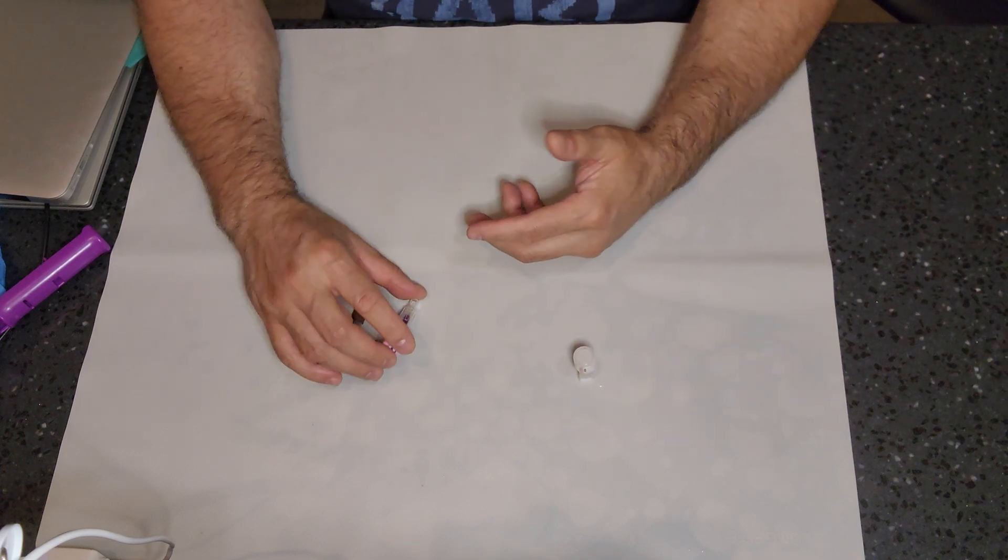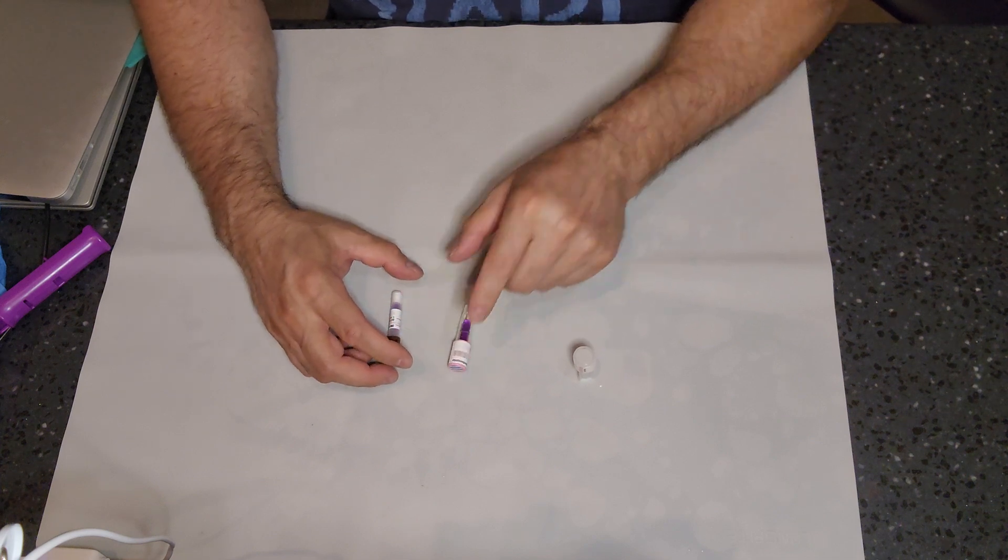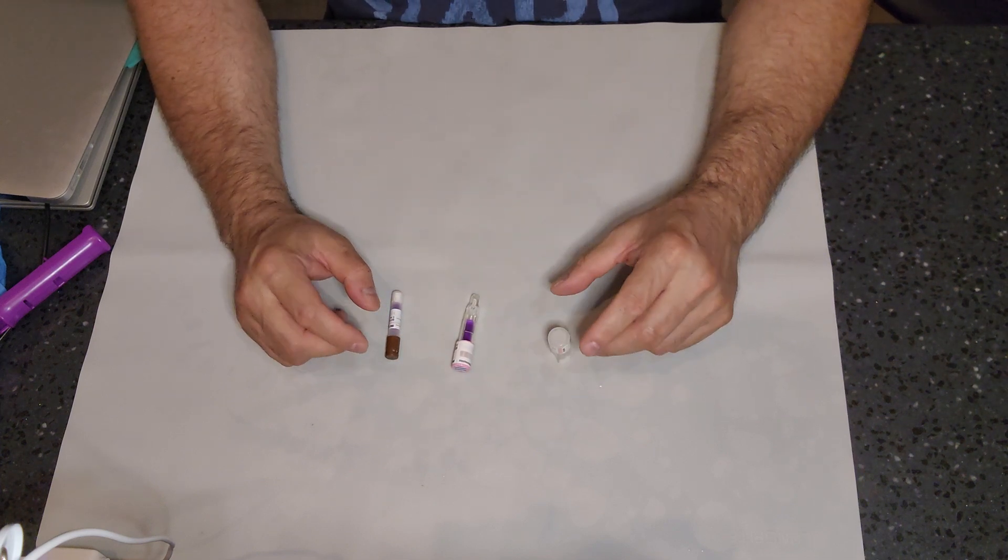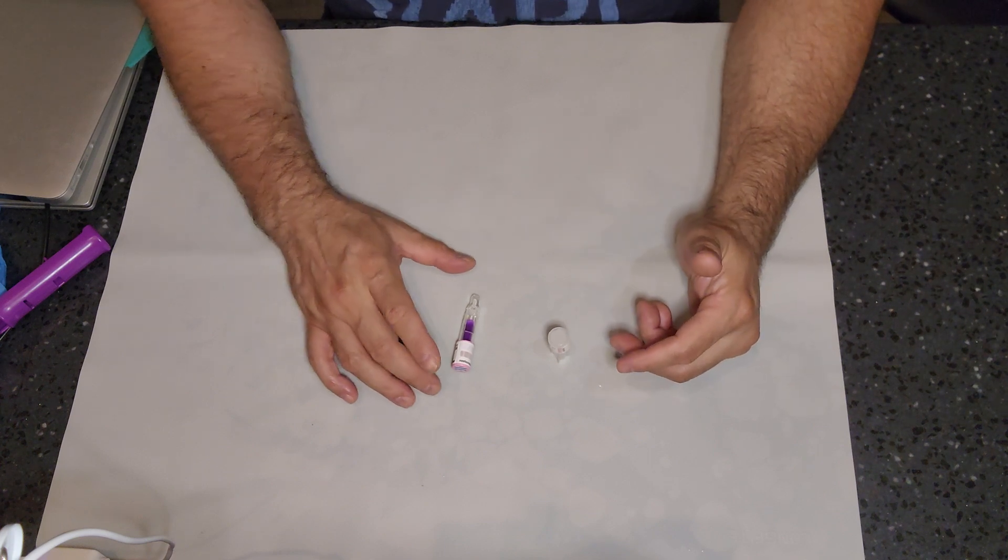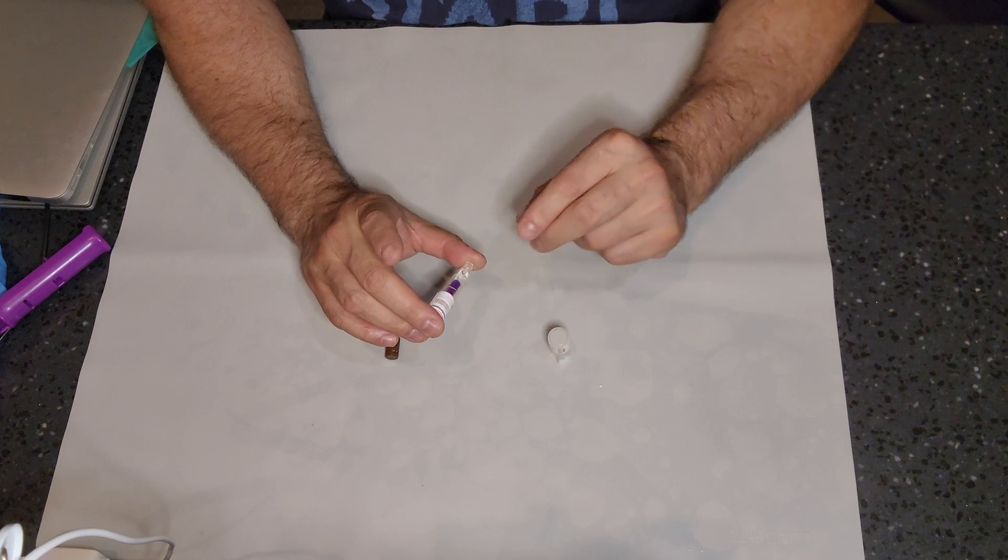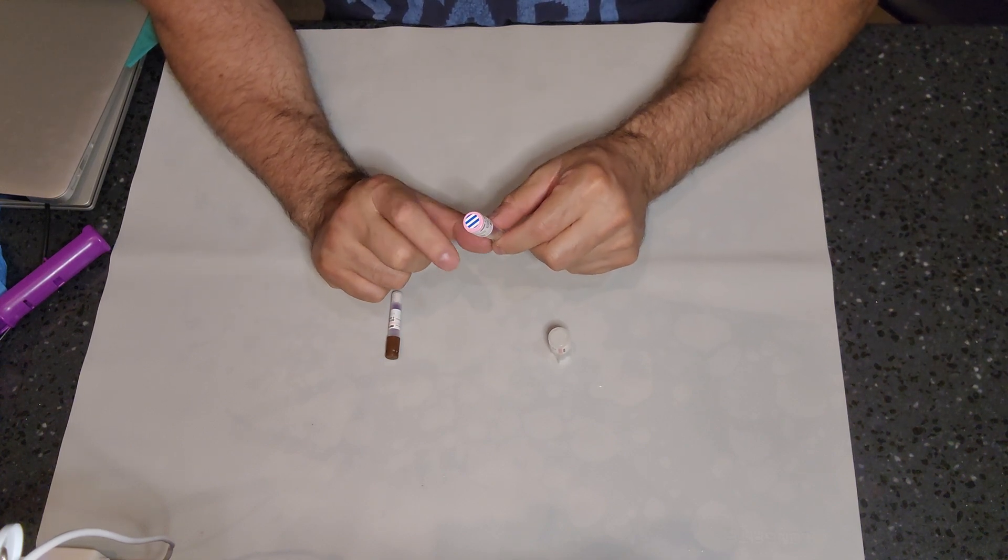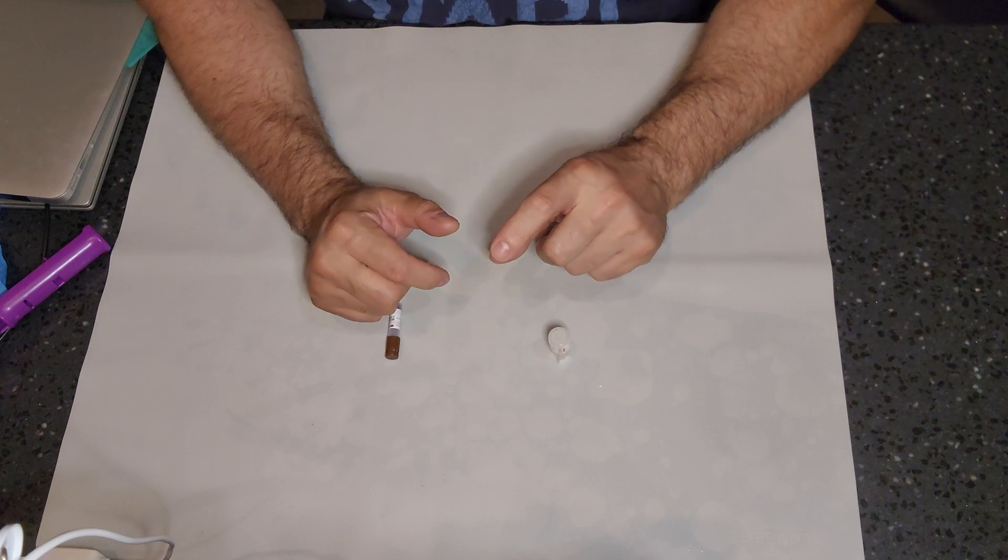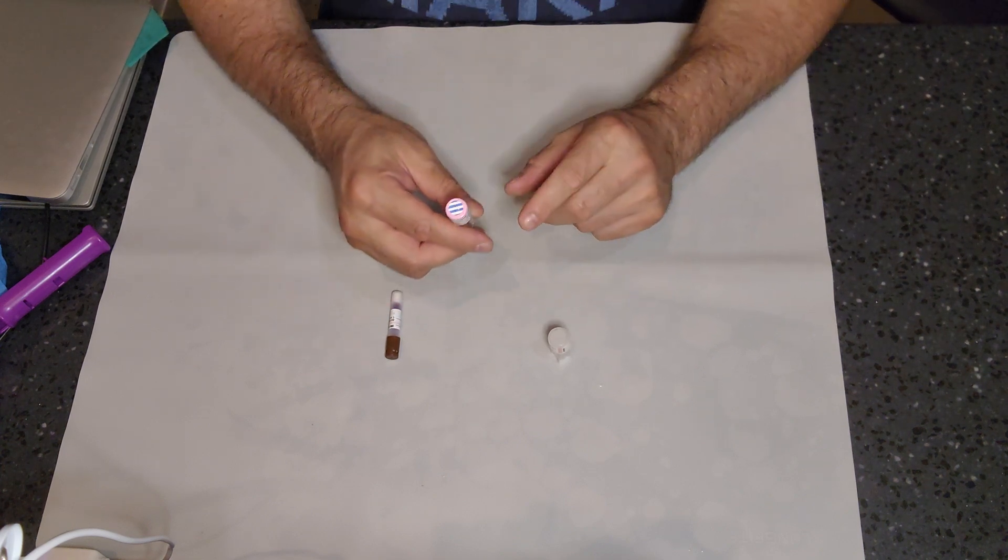Let's talk about the anatomy of what a biological indicator has. These three biological indicators are known as self-contained biological indicators, being that the growth medium, the endospore, and the container in which you're going to house and incubate is all in one. Let's go through this anatomy.